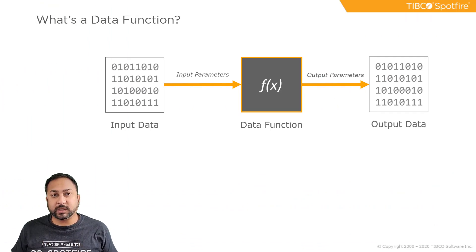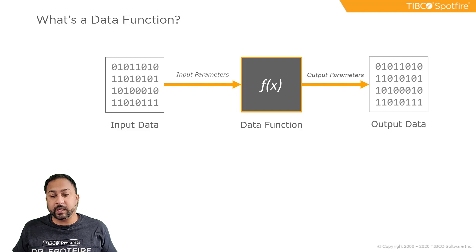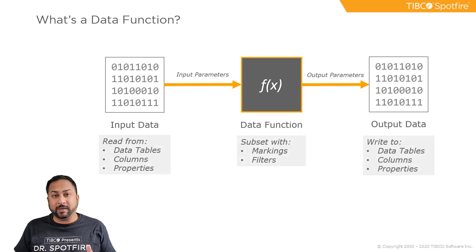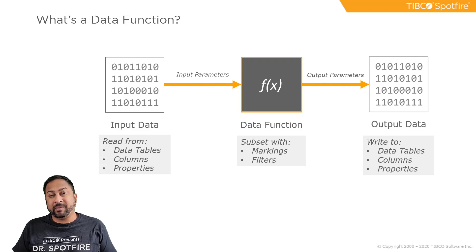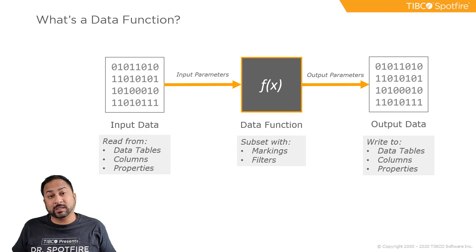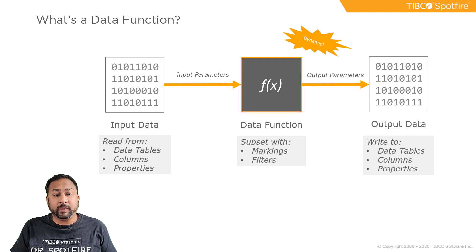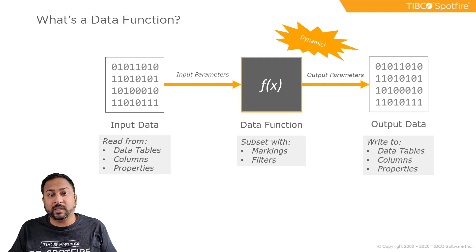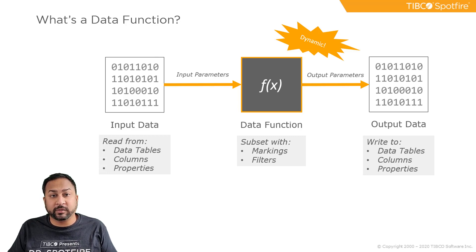Data functions work with a very simple premise. You have input data, it will go through a data function, and it will give you output data. The input data can be read from tables, columns, or even certain values in document properties. They can be subset with markings and filters, and then they can output to data tables, columns, or document properties as well. It can all be made very dynamic to be triggered when new data comes in or you select new markings, making it all interactive and immersive.